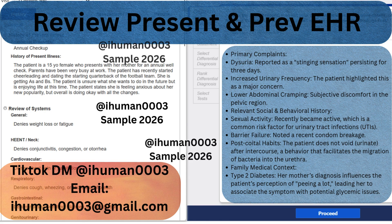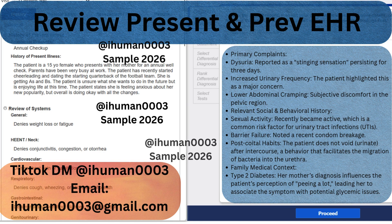Moving to the physical exam, the patient is afebrile and stable. The standout finding is suprapubic tenderness on palpation. Crucially, she has negative CVA tenderness, no fever, and no vaginal discharge. These pertinent negatives are vital — they allow us to move pyelonephritis and STIs further down our differential list and focus specifically on the bladder.